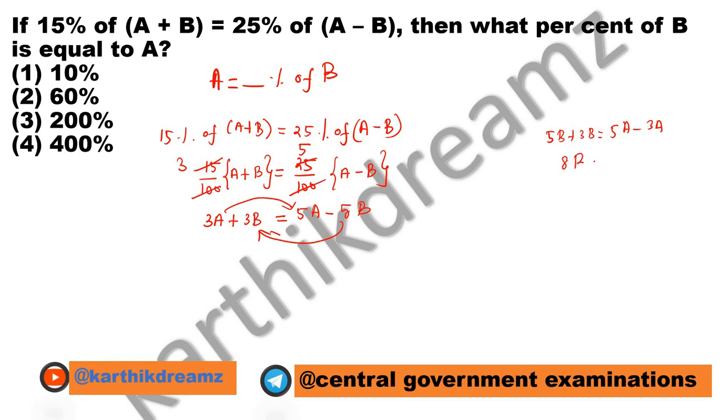Now 8B equals 2A, and A equals 8B by 2. When it gets cancelled, it is 4B.